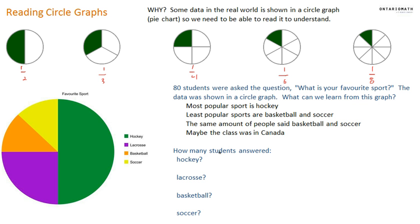Now sometimes we'll be asked to figure out how many students in particular answered something. We can figure this out because we know 80 students were actually asked the question. Hockey takes up half the graph, so half of the people said hockey. This part looks like a quarter, so one quarter said lacrosse. And this is half of a quarter, so one eighth said basketball, and one eighth said soccer.